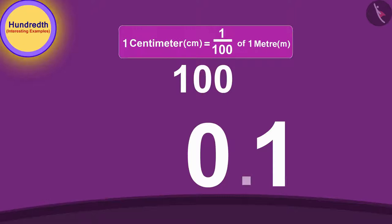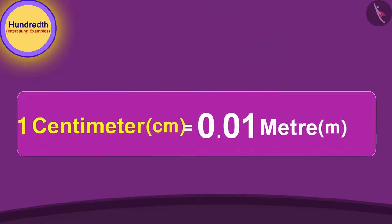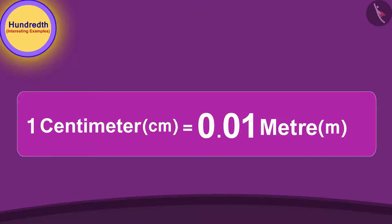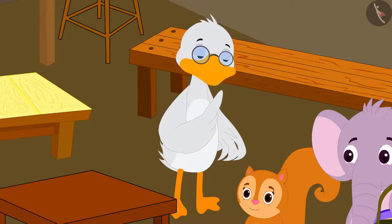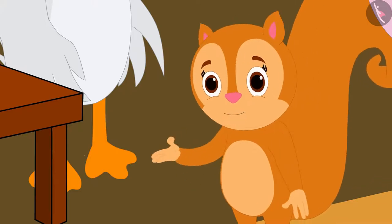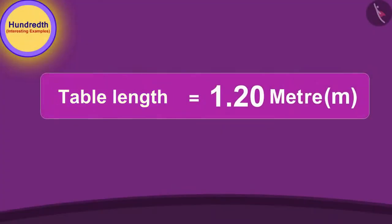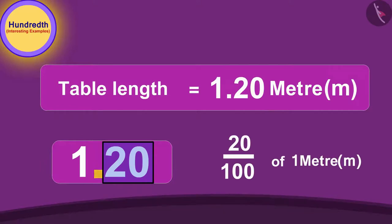Then we slide the decimal point to the left for the second time. In this way, one centimeter becomes 0.01 meter. Uncle explained to Chanda. Okay, now I understood uncle!